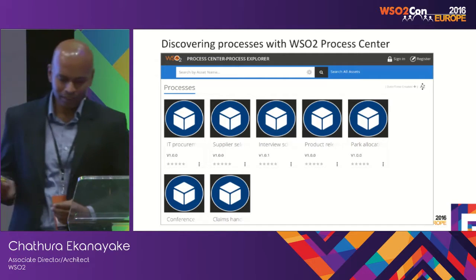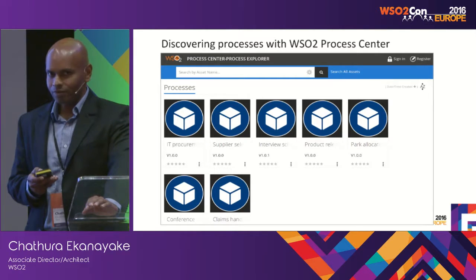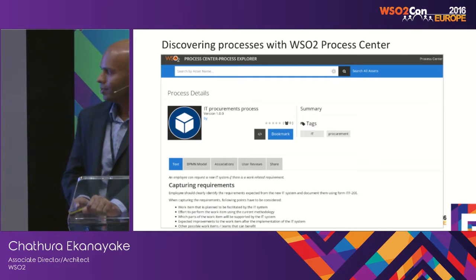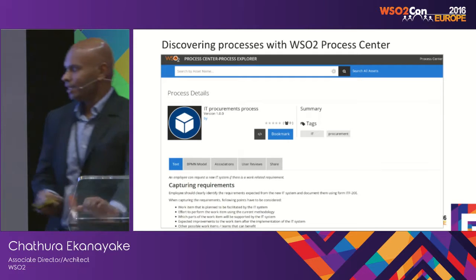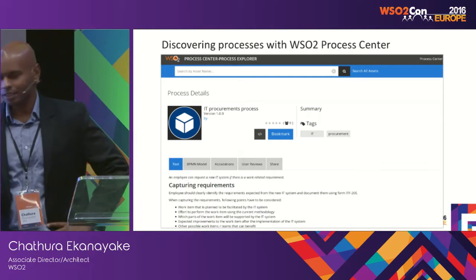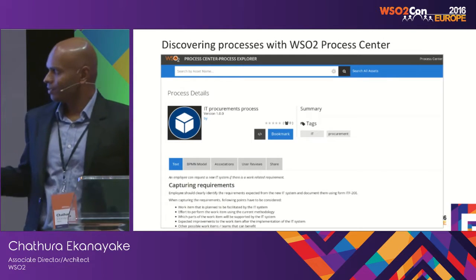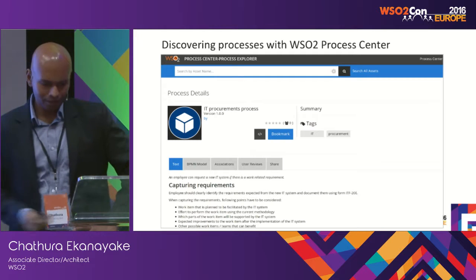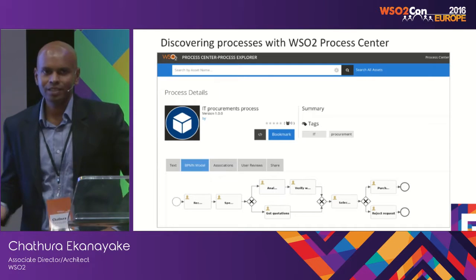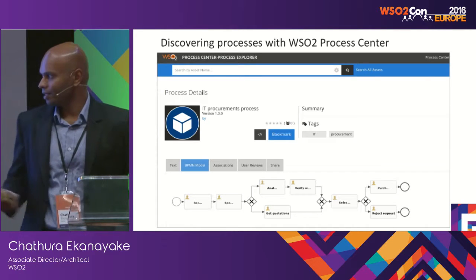He can search the processes using keywords or content search. Then he can find the process he is looking for. He is looking for a procurement process and can look at the steps involved. He simply reads the documentation and gets to know what the next steps are. There are multiple ways to describe processes — if the process is described using text it is available as text, and there can be BPMN models associated as well. Bob can go to whatever format he prefers, look at the process, and decide on the next steps.